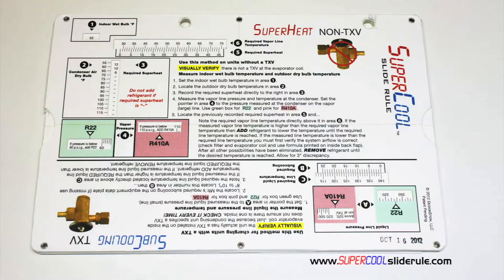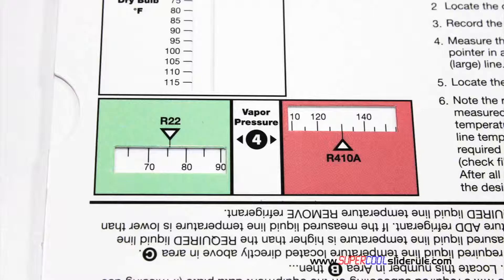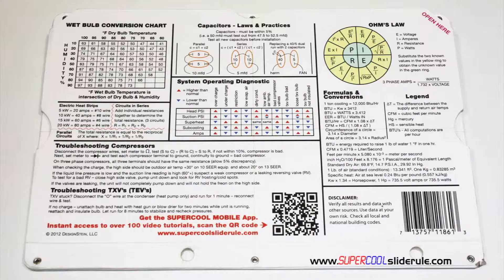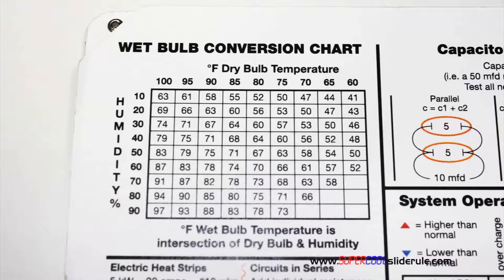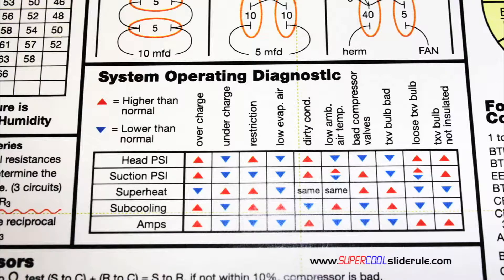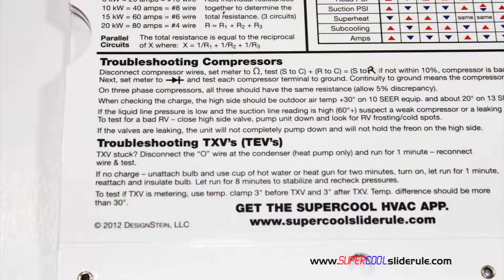This one tool will allow you to charge a system with R22 or R410A in either the superheat or subcooling method. The back cover contains required formulas, capacitor rules and practices, a wet bulb conversion chart, how to perform computations on series or parallel circuits, an electric heat strip guide, a complete system troubleshooting diagnostic chart, and how to troubleshoot compressors and TXV.